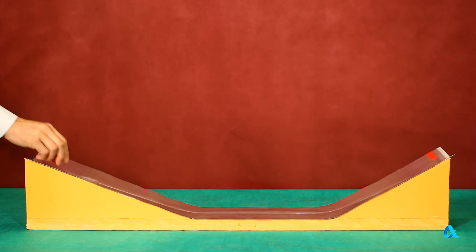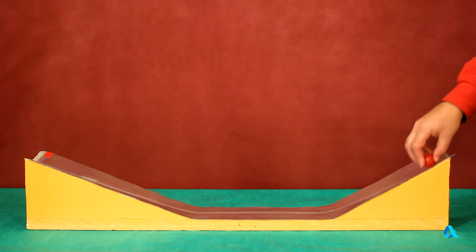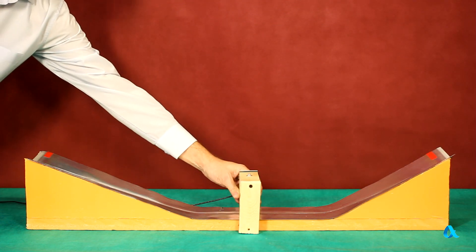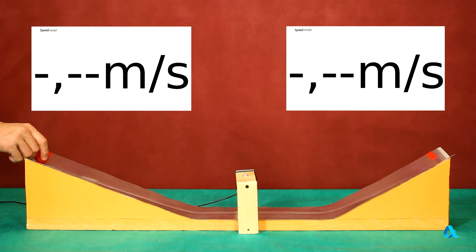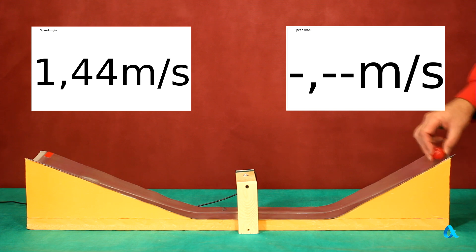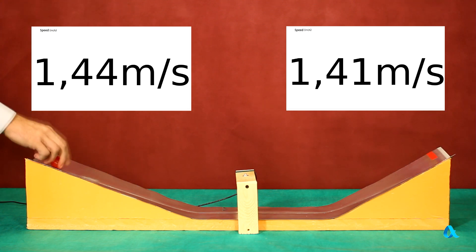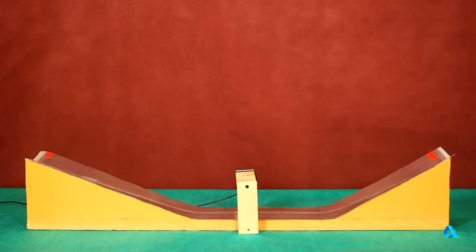To find it out, we place a photogate in the ball's way. The speed of the ball rolling down a low-angle slide turned out to be 1.44 m per second, while a steep one imparted the speed of 1.41 m per second. So, the speed values are practically equal.